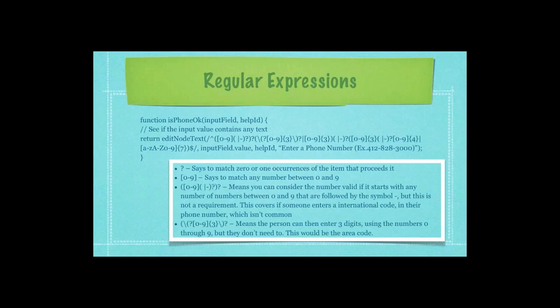This covers if someone enters an international code in their phone number, which isn't very common. Then the last series of characters means the person can then enter three digits using the numbers zero through nine, but they don't need to. This would be, for example, an area code.